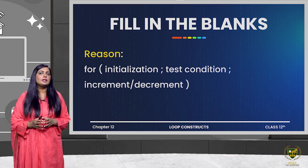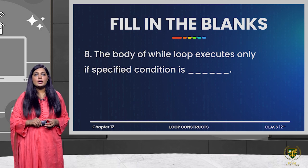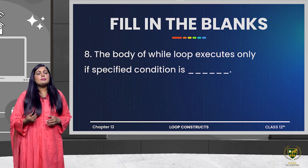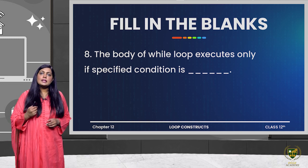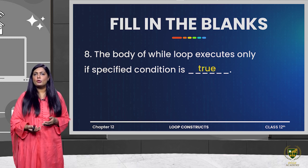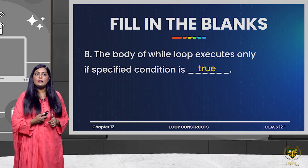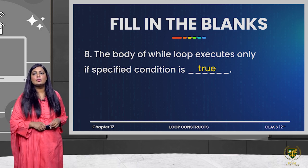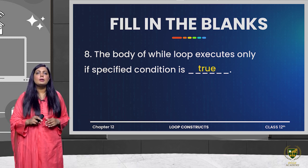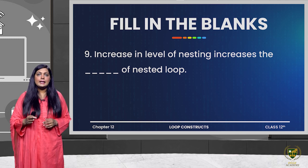All three are mentioned, though not all are compulsory — some are optional, but the condition is still compulsory. The next question is: the body of the while loop executes only if the specified condition is dash. In any conditional statement, the body of the loop executes when the given condition is true, except for the do-while loop where execution happens at least once whether the condition is true or false. But in the while loop, the condition is checked first.